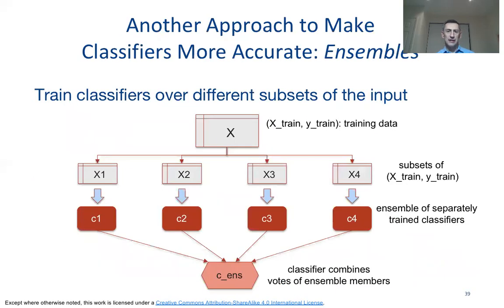Let's talk about an alternative approach that builds on decision trees: the concept of ensemble forecasting as a way of making classifiers more accurate. The basic idea is to train a classifier over different subsets of the input data set — rather than use one set to build a model, the idea is to make a number of subsets and build separate models for each, then combine those results together, typically using some sort of a majority voting scheme.